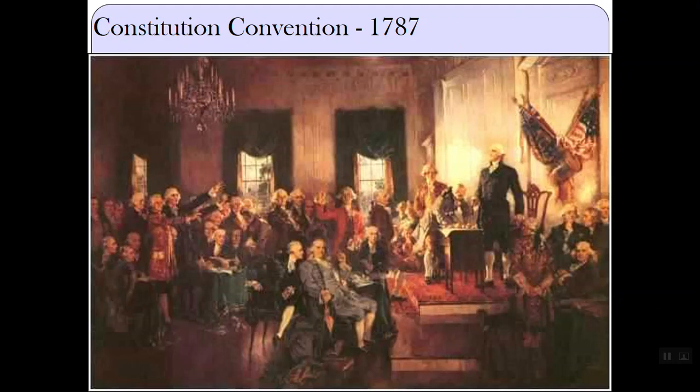They decided in Philadelphia to throw out the Articles and start over, drafting an entirely new government — a government with a foundation in federalism, a balance between states and the federal government, making sure that the states had their power but that there was a government to control and watch out for everyone's interests. And they came up with the Constitution, a document strong and flexible enough to work in 1787 and still work today. The Founding Fathers wouldn't have foreseen things like air traffic control, but they created a Constitution flexible enough to allow the government to create those types of programs.